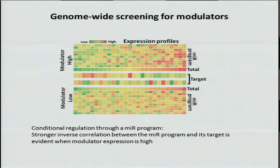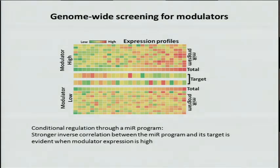Looking across TCGA samples — each sample in every column — we are looking at genes and identifying microRNA programs that target them. What we would hope to see is that the total expression of these microRNA programs is inversely correlated with the expression of their target. When we do a genome-wide screen, we are looking for genes that change this correlation. In this cartoon, when the candidate modulator of MIR expression is high, the MIR program is inversely correlated with the target. When it's low, this correlation is weaker.